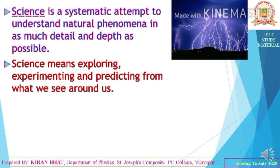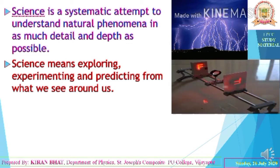Science can also be defined as exploring, experimenting, and predicting from what we see around us — exploring means providing explanations. For example, on an optical bench, light coming out from a lens produces an inverted image. Why does this inverted image appear after passing through the lens? This is the experimenting and predicting purpose of science.